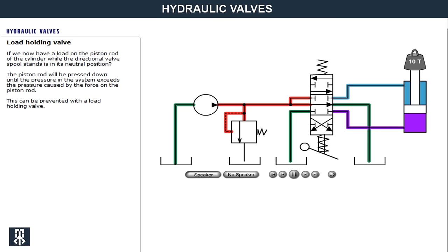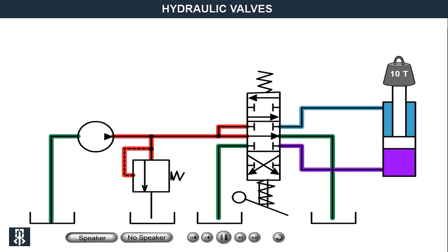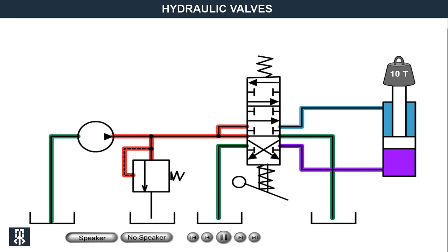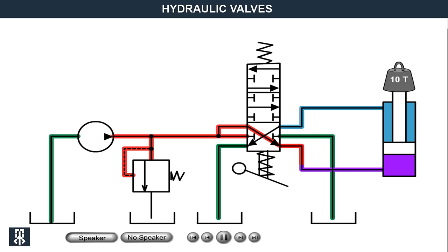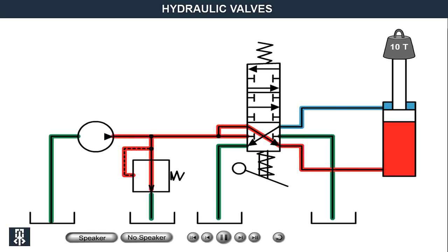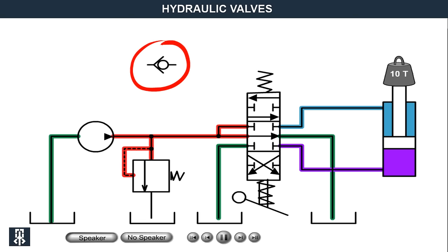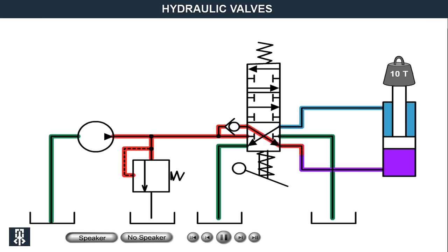If a strong force loads the piston rod when the directional valve stands in neutral position, and we try to lift the load by changing the directional valve position to connect the pump with the cylinder's plus side, the higher pressure on the right side of the directional valve and internal leakage in the pump results in oil beginning to flow towards the pump. This causes the piston rod to be pressed down until the system pressure exceeds the pressure caused by the force on the piston rod. This can be prevented with a non-return valve, called a load holding valve, placed before the directional valve — it holds the load until pressure from the pump side exceeds the pressure on the cylinder side.